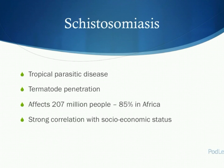Schistosomiasis, or Bilharzia, named after Dr Theodore Bilharz who discovered the condition, is one of the most prolific tropical parasitic diseases. It results due to trematode, or blood fluke, penetration into blood vessels of humans. It affects around 207 million people worldwide, with the main foci of infection being within Africa, where 85% of those affected live. A strong correlation is shown with socio-economic status, with poor sanitation methods being the primary cause of disease spread.